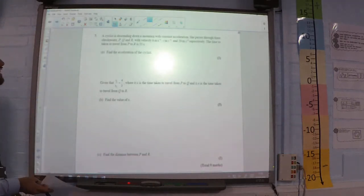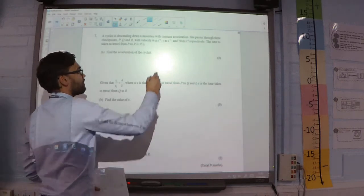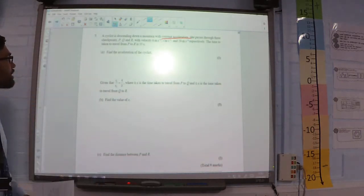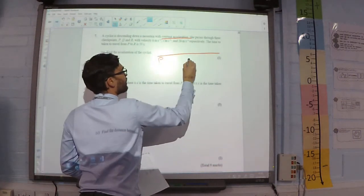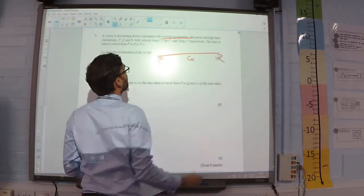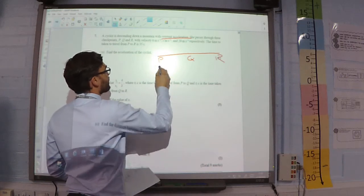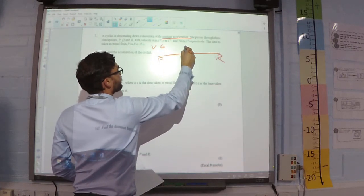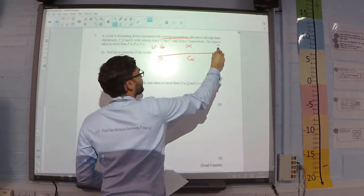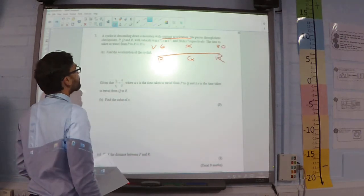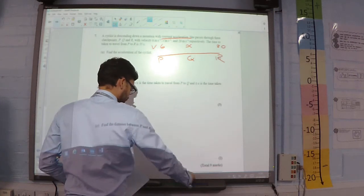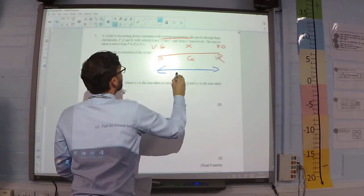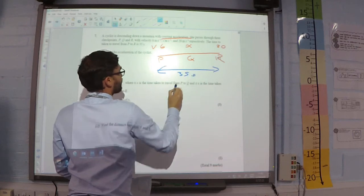Question 7. The cyclist is descending down a mountain with constant acceleration. Constant acceleration means SUVAT. She passes through three checkpoints P, Q and R. So, we've got P, Q and R. The velocities are 6, some unknown X, and 20. The time to travel from P to R is 35 seconds.